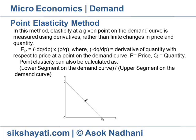Ep is equal to dq by dp, multiplied by p by q, where dq by dp is the derivative of quantity with respect to price at a point on the demand curve. P is equal to price, and q is equal to quantity.